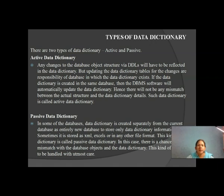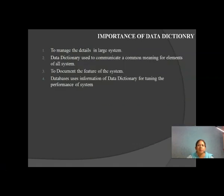A passive data dictionary is maintained separately — it could be in an XML file or another format. When we change the structure of a file, that structure change does not automatically reflect in the passive data dictionary. So there is a possibility of mismatch in a passive data dictionary.